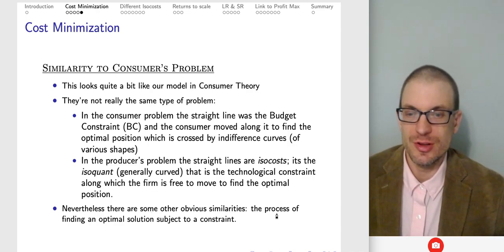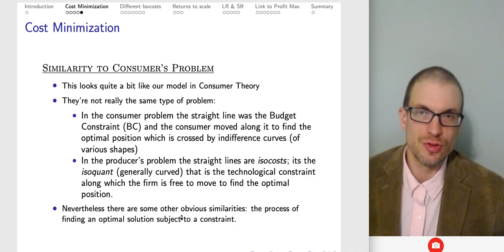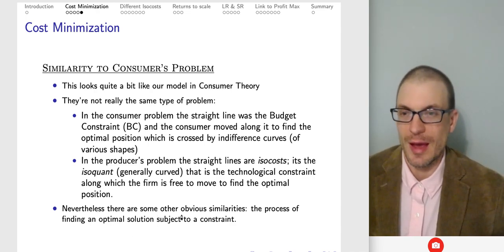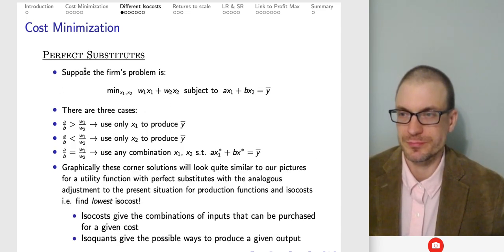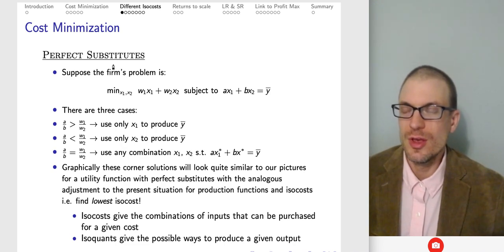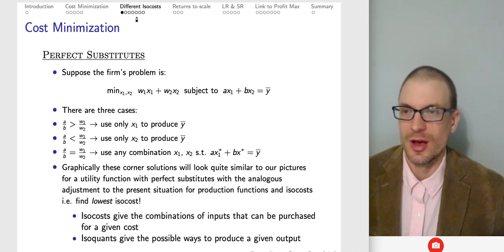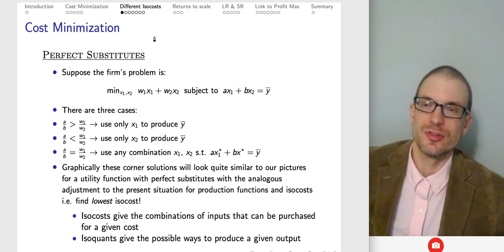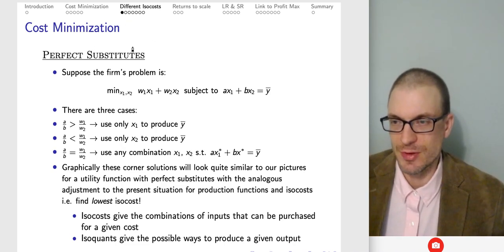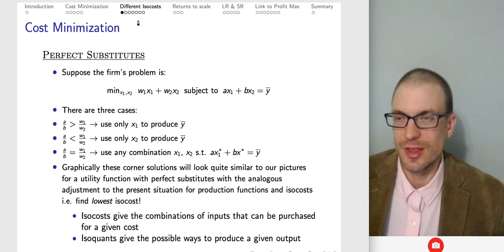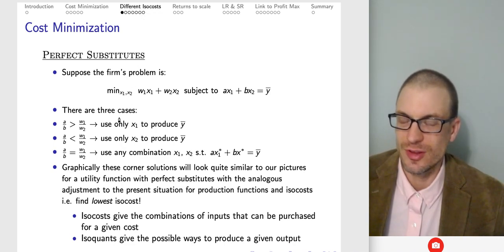The process of finding an optimal solution subject to a constraint has a largely similar feel to consumer theory. I'll go through a recipe book for solving cost minimization problems. I want to discuss what the isoquants look like for different types of production functions and how we'll solve things in each case.